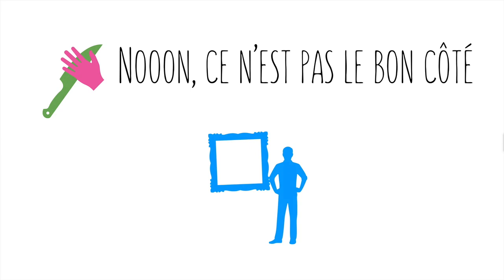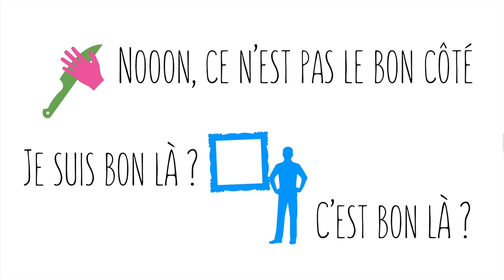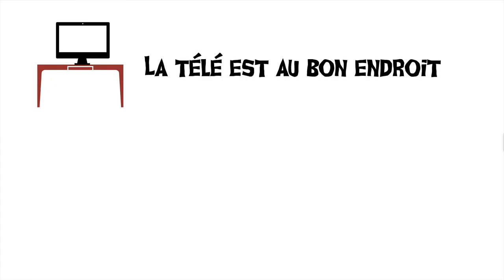You want to put a painting or a picture on a wall and you need help to be sure it is correct. So you can say 'Je suis bon là?' — is that okay? Or you can say 'C'est bon là' — so it is correct, it is okay. Again, we use the word 'bon'. You can also say 'La télé est au bon endroit' — le bon endroit is the right place.